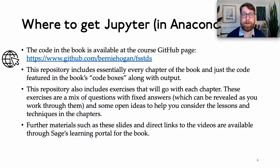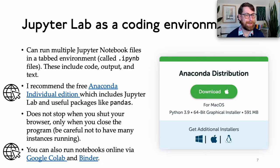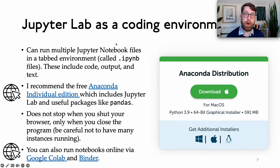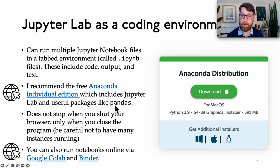Where to get Jupyter — what we need for this book? The code is available at my website, but let's first go through JupyterLab as a coding environment. Jupyter can run multiple notebook files in a tabbed environment, kind of like a browser — it's like a browser in a browser. I recommend the Anaconda Individual Edition, which includes JupyterLab and useful packages like Pandas. Pandas is a library in Python that we'll be entering things into.